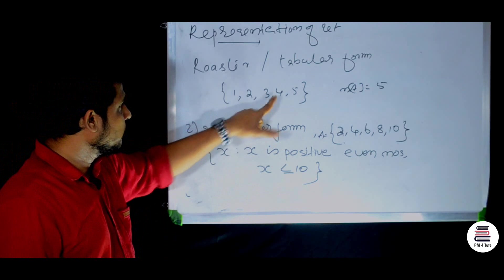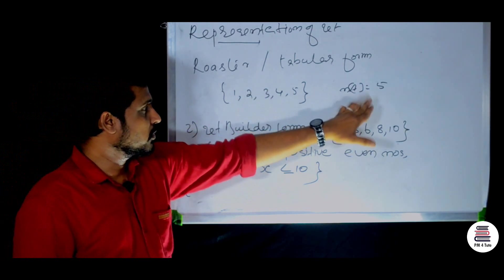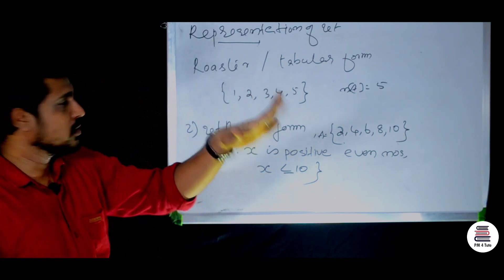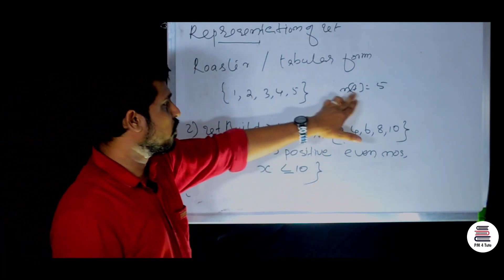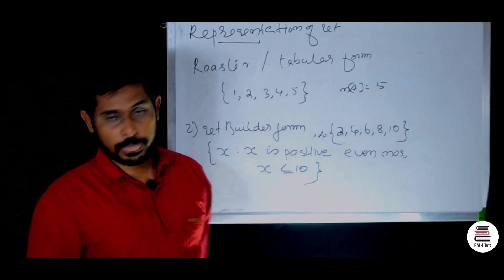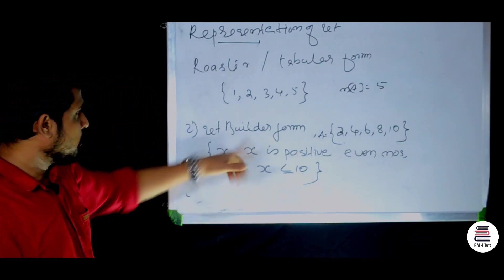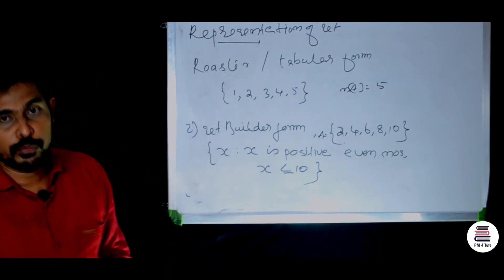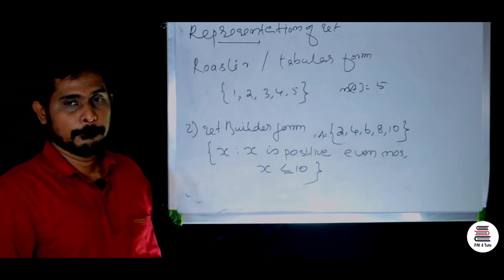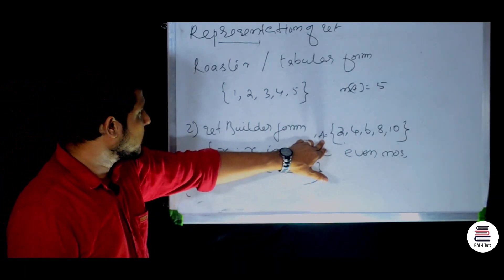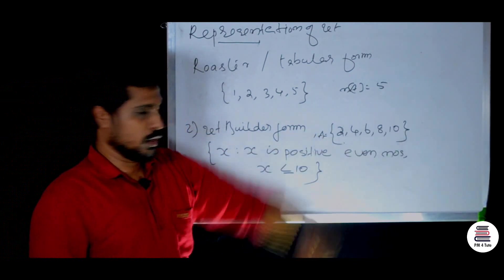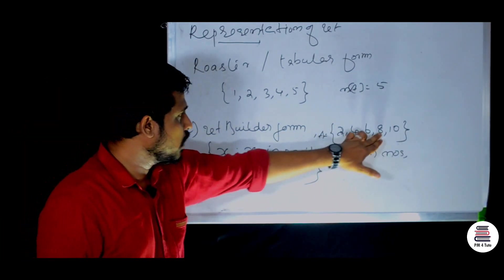In roster or tabular form, for a set A = {1, 2, 3, 4, 5}, the number of elements in A is 5. Next one is the set builder form.